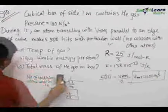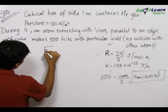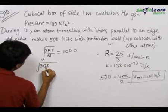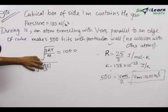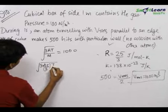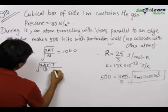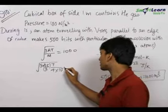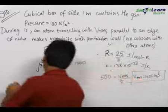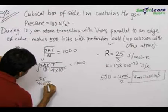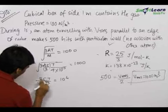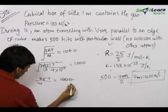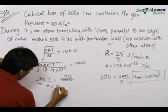Now, v_rms = 1000 m/s. Using the formula √(3RT/M) = 1000, we feed in the values: 3 × (25/3) × T / M, where M is the molecular mass of helium gas. The atomic mass is 4, so the mass of 1 mole is 4 grams, which we write as 4 × 10⁻³ kg. Therefore, 25 / (4 × 10⁻³) × T = 10⁶, giving T = 160 Kelvin.